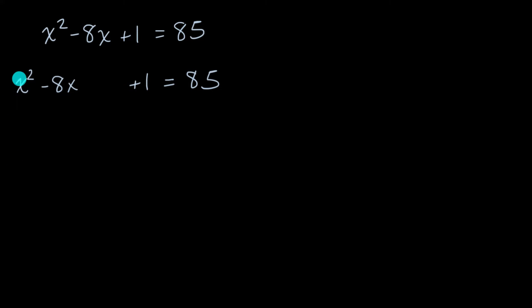Now, if I want to complete the square, I just have to think, what can I add to both sides of this equation that could make this part of the left-hand expression a perfect square? Well, if I look at this negative eight coefficient on the first degree term, I could say, okay, let me take half of negative eight. That would be negative four. And then negative four squared is going to be positive 16. So I'm gonna add a positive 16 on the left-hand side.